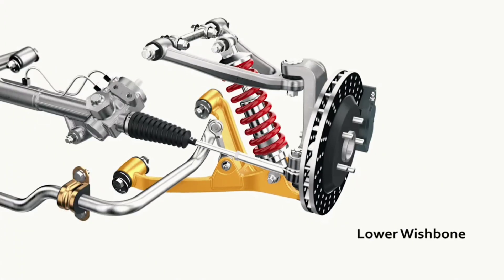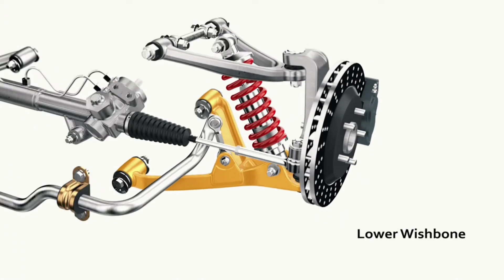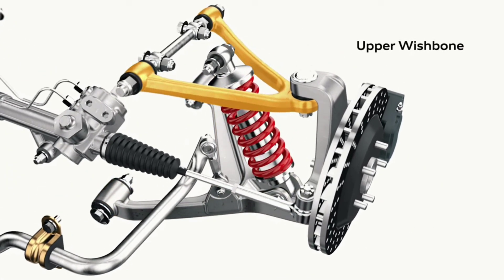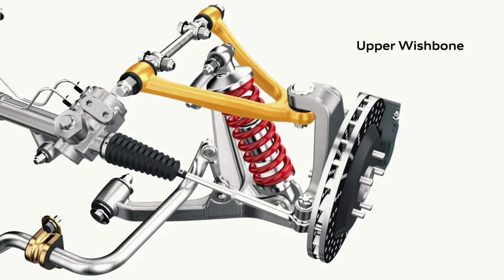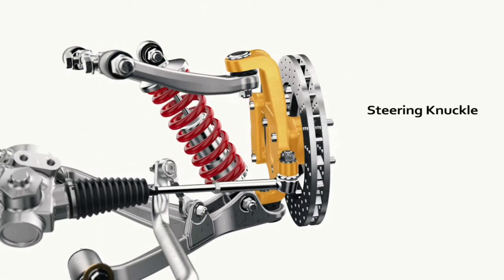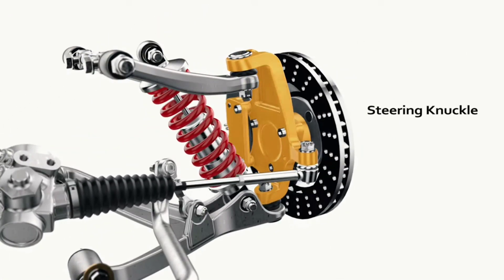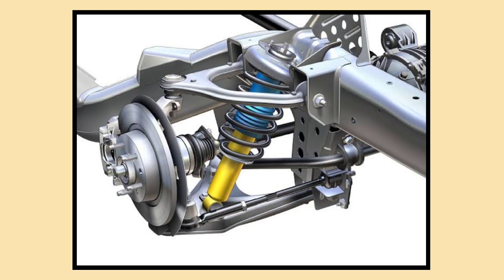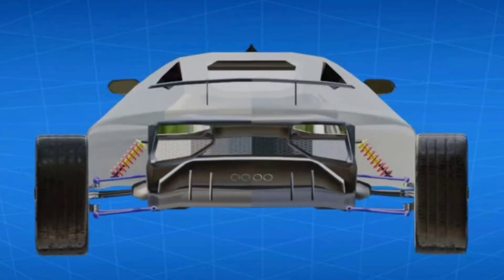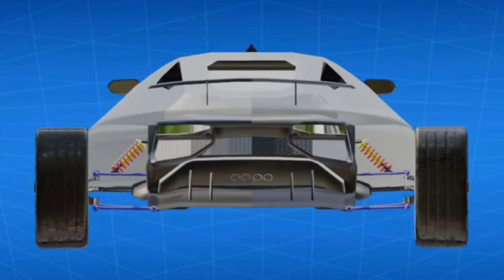Next is the double wishbone suspension. This setup uses 2 arms to control wheel movement, offering superior handling and stability. It's often seen in sports cars where performance is crucial. While more complex and expensive, it provides a better driving experience.